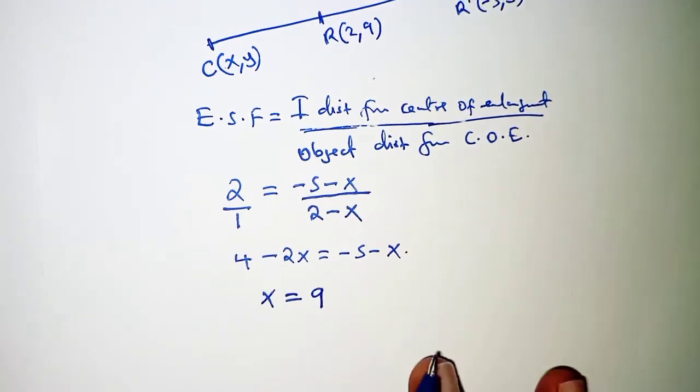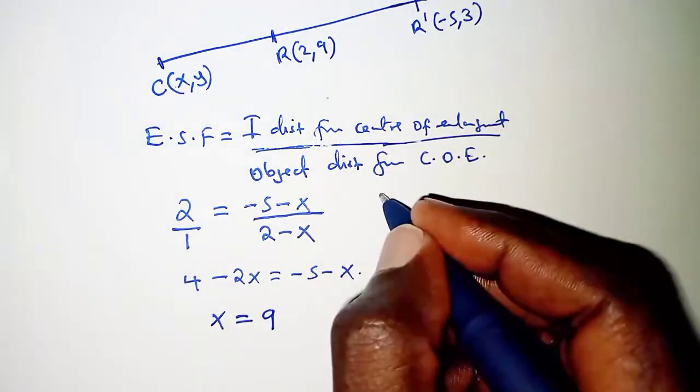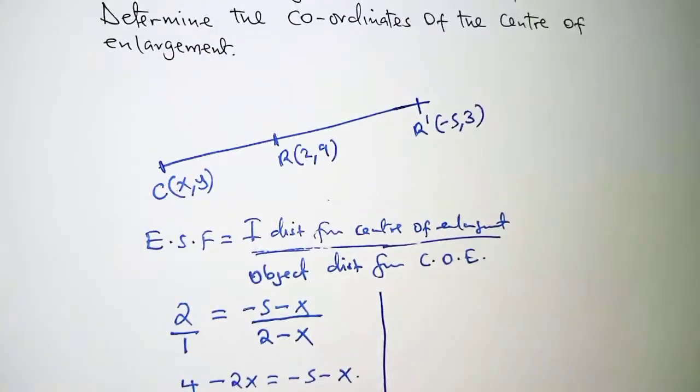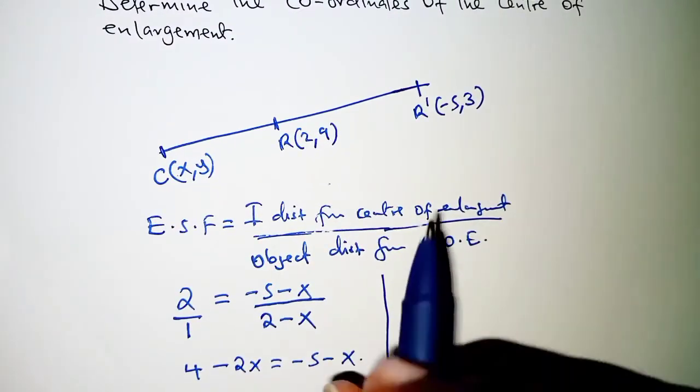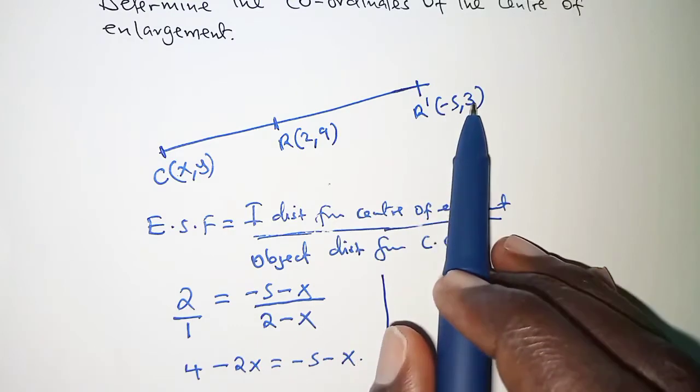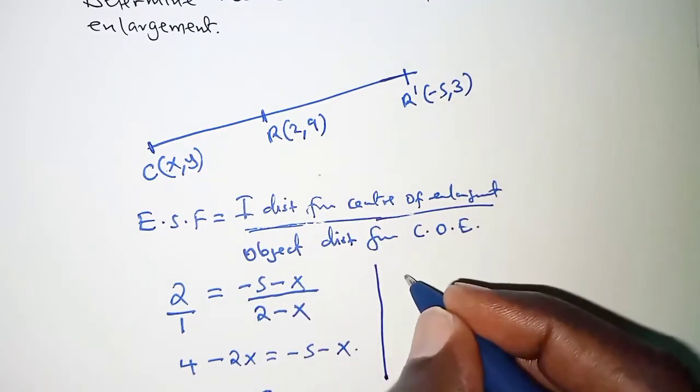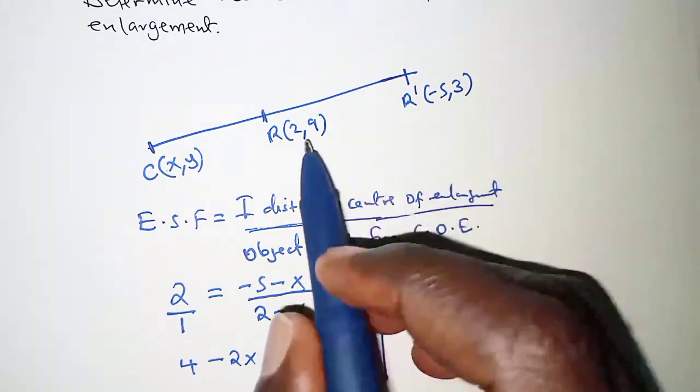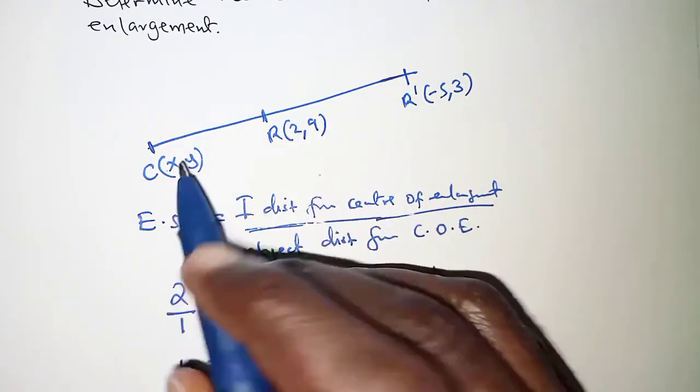So the value of x is 9. How about for the y coordinate? For y coordinate we will follow the same procedure so we'll have (3 minus y) over (9 minus y).